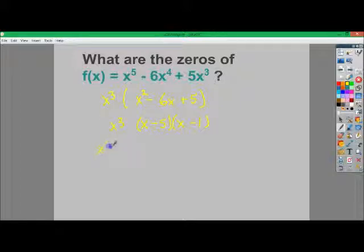And I set all these equal to 0. And I get x equals 5, x equals 1, but I get x equals 0. But not only does it happen once, it happens 3 times. So I end up with an odd multiplicity, which could make for a very interesting graph.